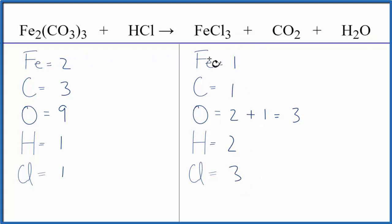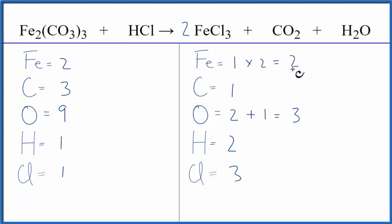Let's fix the irons first — we have two here and one here. We'll put a coefficient of two in front of the iron three chloride. So one times two gives us two iron atoms — they're balanced. Three times two gives us six chlorines.